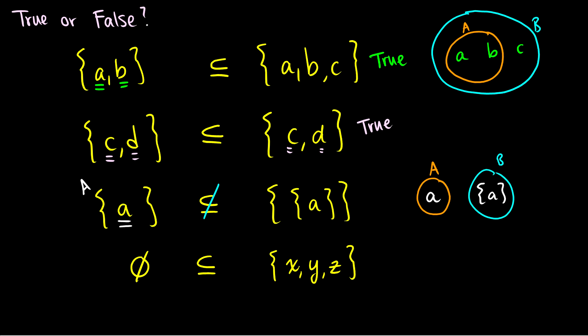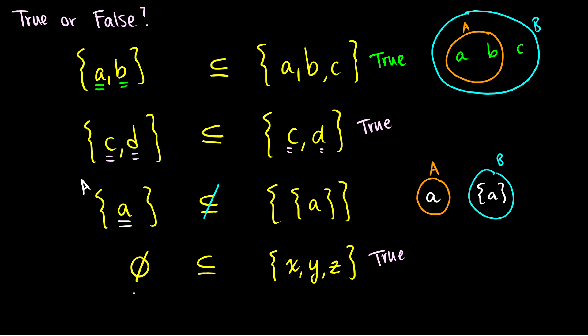Finally, is the empty set a subset of {X, Y, Z}? The answer is yes, it is true. The empty set is a subset of every set, because the definition says everything in the empty set must be in the other set — but there is nothing in the empty set. Therefore this is trivially true. The empty set is a subset of every single set.